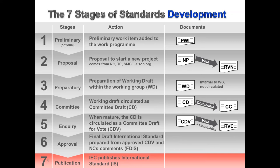As you can see, many documents go in pairs: NP with RVN, CD with CC, CDV with RVC, and FDIS with RVD. After every ballot, a companion document is circulated providing all results transparently, so all P members can see how others voted and what comments they made. This transparency is very important for having the standard accepted by industry and stakeholders.